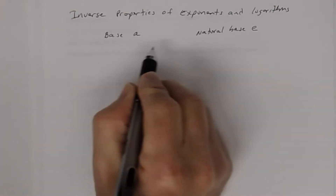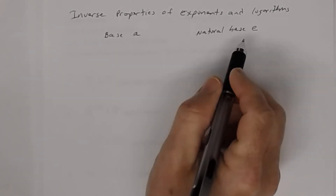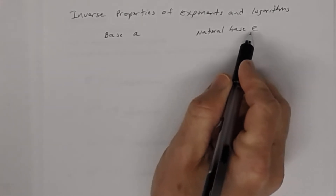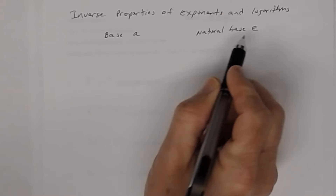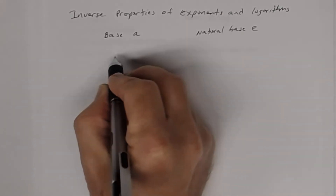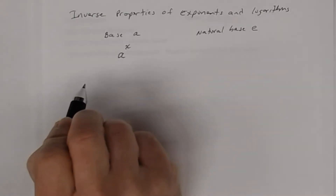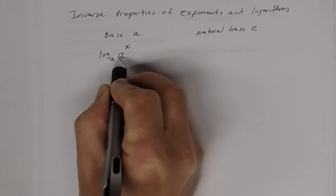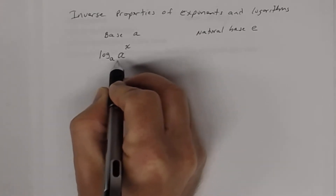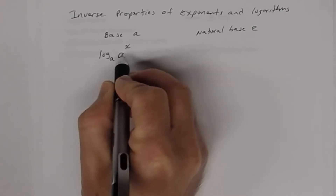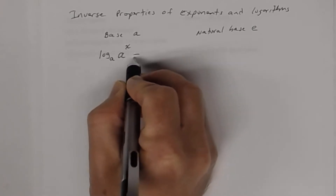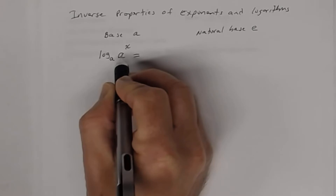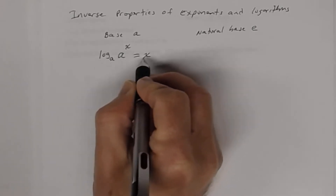We're going to start with base a. If I have a raised to a power and I take the log of that expression with base a — so the base of the logarithm is the same as the base of the exponential — then that expression, log base a of a^x, is going to equal just the exponent x. You learned about that in a previous lesson.